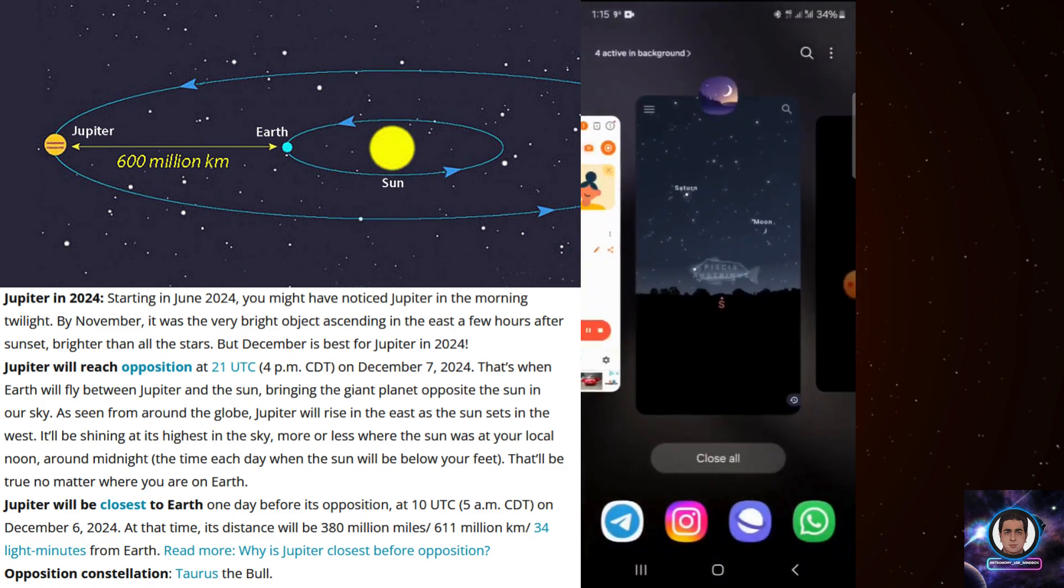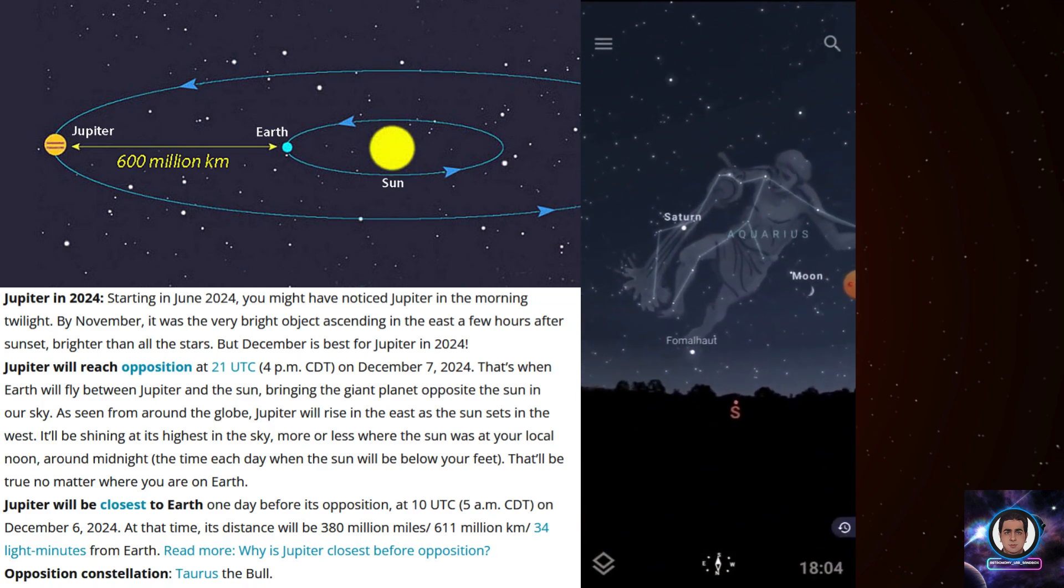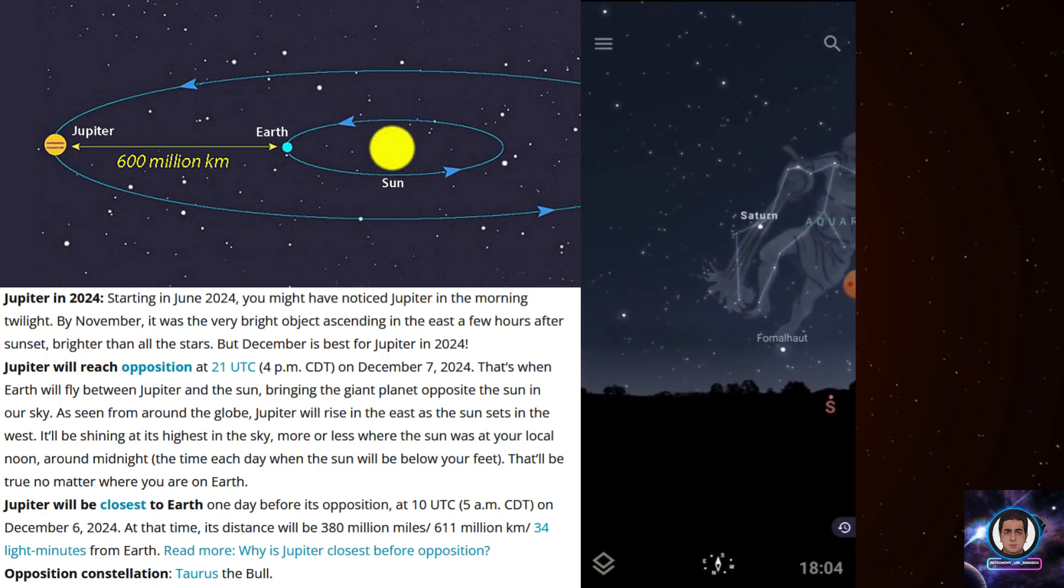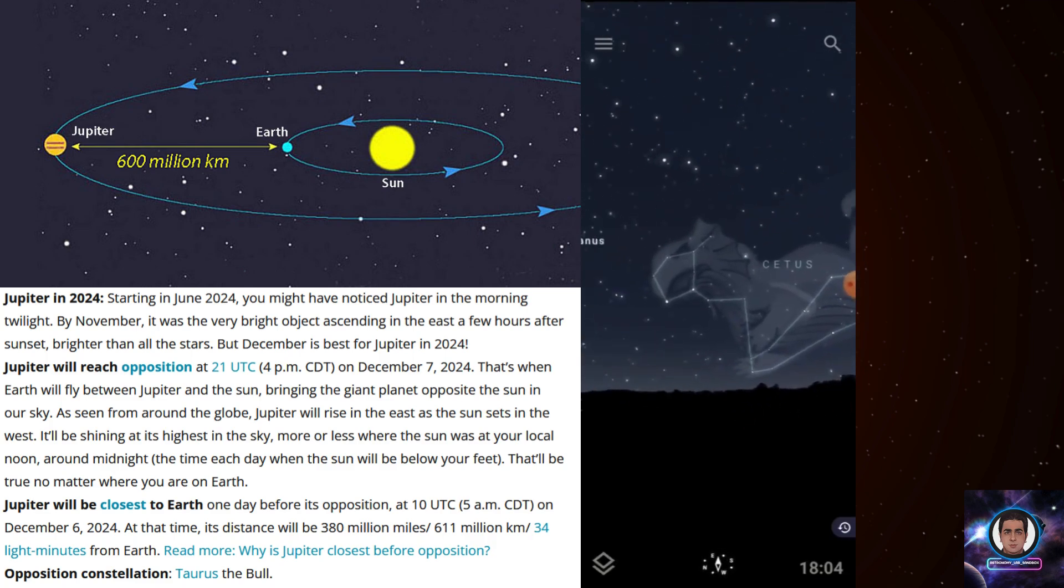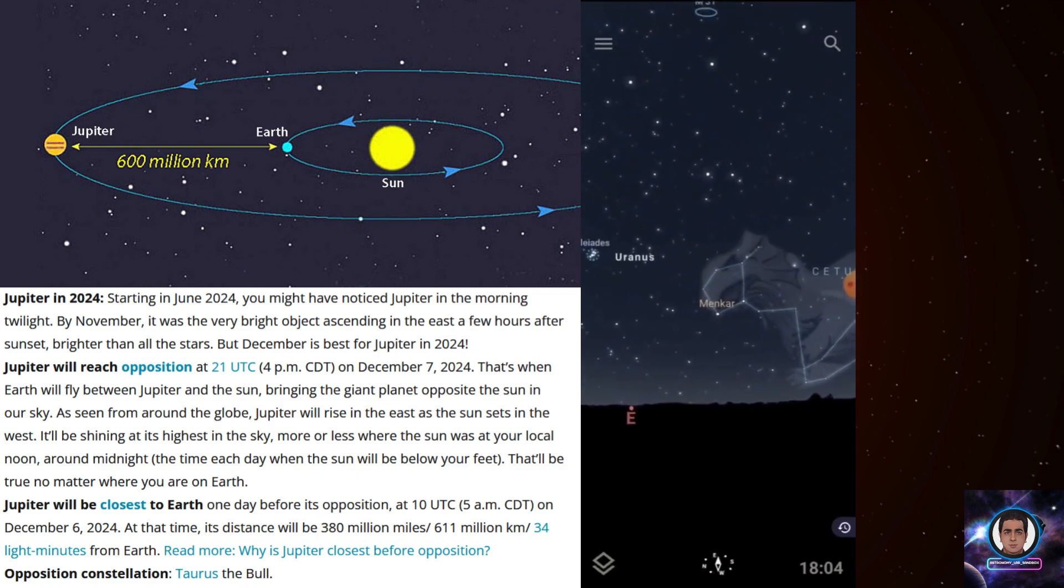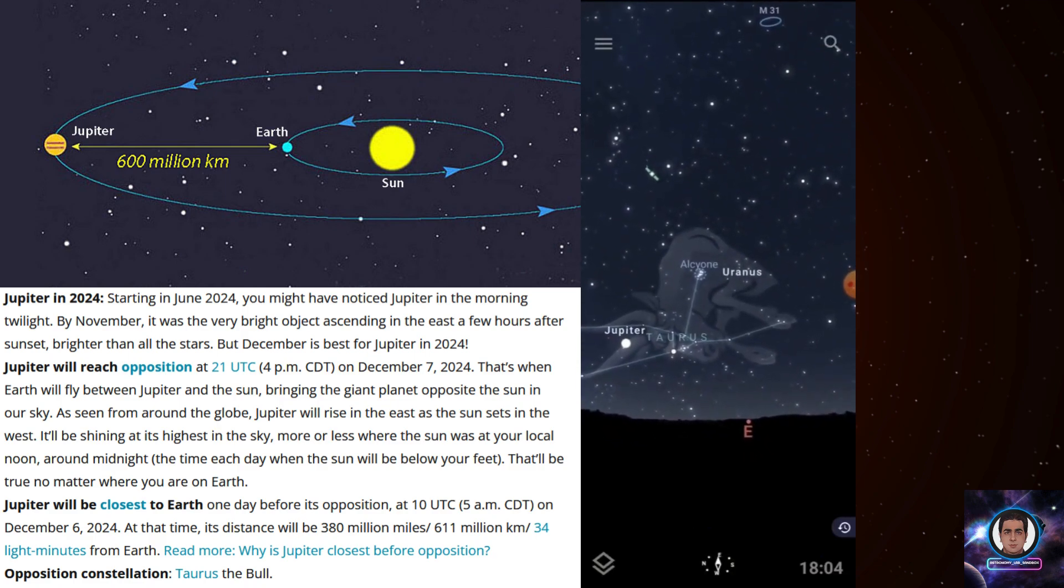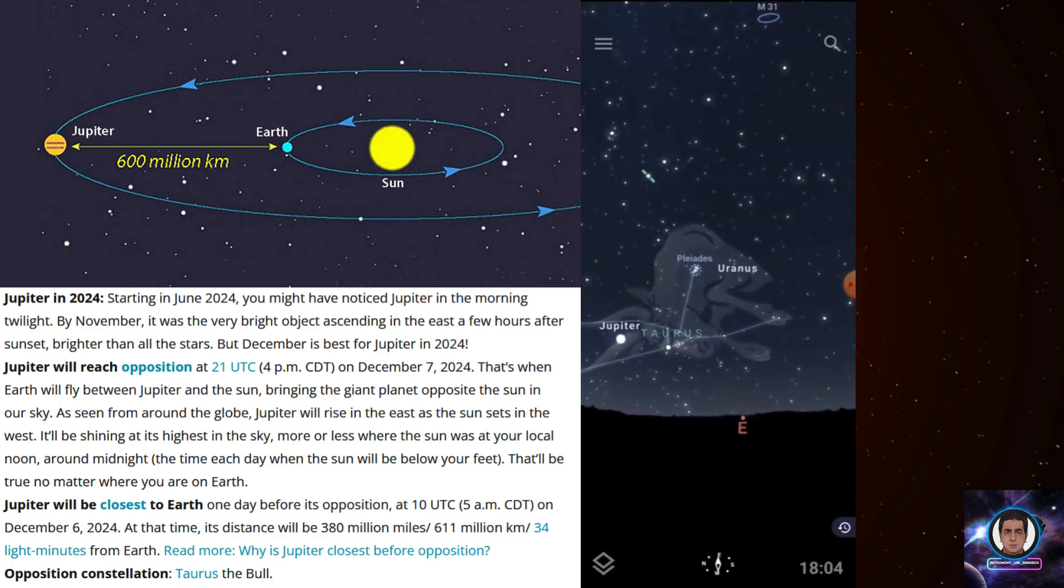But for now I want just to find out where is Jupiter. This is my camera and I cannot see anything in the sky, but I can guess and recognize where Jupiter is. So I'm turning around toward east and also I can search from the search bar.